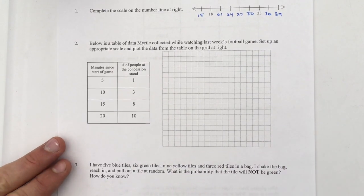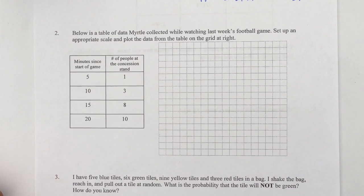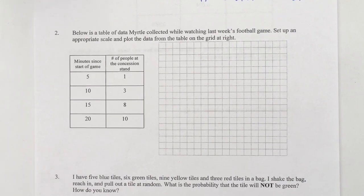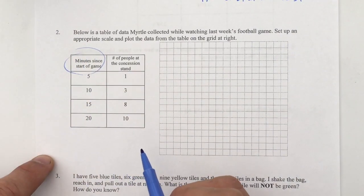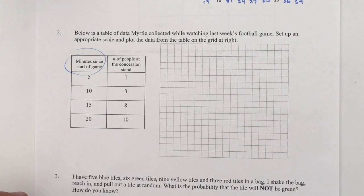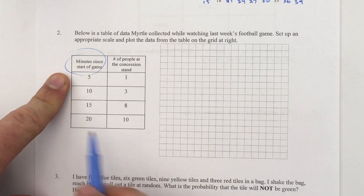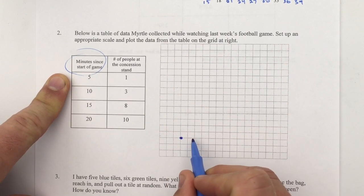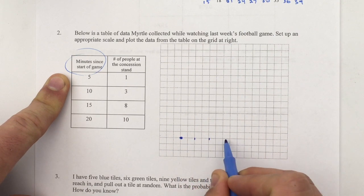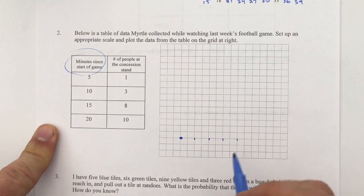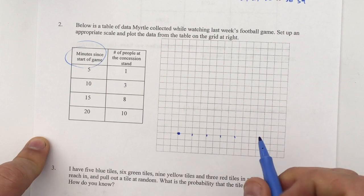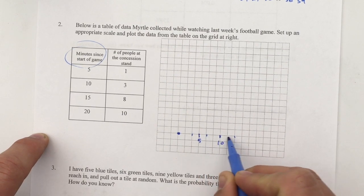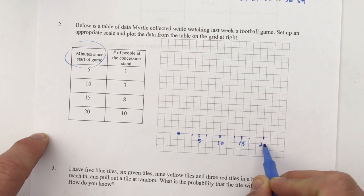Now, here was the big problem on this test. Below is a table of data Myrtle collected while watching last week's football game. Set up an appropriate scale and plot the data from the table on the grid at right. First of all, my minutes since start of game, since it's time and time marches on independent of anything else happening, that's going to be my x-axis. And I need to get all the way to 20. I'm going to do every 3 spaces is 5. So that's 5, 10, 15, 20.